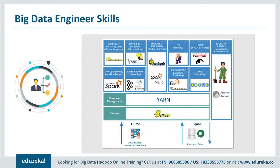Some of the Hadoop tools you need to master: first, HDFS, the storage part of Hadoop and its foundation. Next, YARN, which performs resource management by allocating resources to different applications and scheduling jobs. MapReduce is a parallel processing paradigm that allows data to be processed in parallel on top of HDFS. Then we have Pig and Hive — Hive is a data warehousing tool on top of HDFS catering to SQL-background professionals, while Apache Pig is a high-level platform used for data transformation on top of Hadoop.